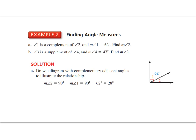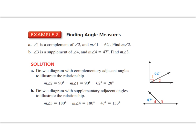Part B: angle 3 is a supplement of angle 4, and the measure of angle 4 is 47 degrees. Find the measure of angle 3. Start with a diagram — sketch a straight angle and include a ray to create two angles, labeling angle 4 as 47 degrees. Since they're supplementary, subtract 47 degrees from 180 degrees. The measure of angle 3 is 133 degrees.